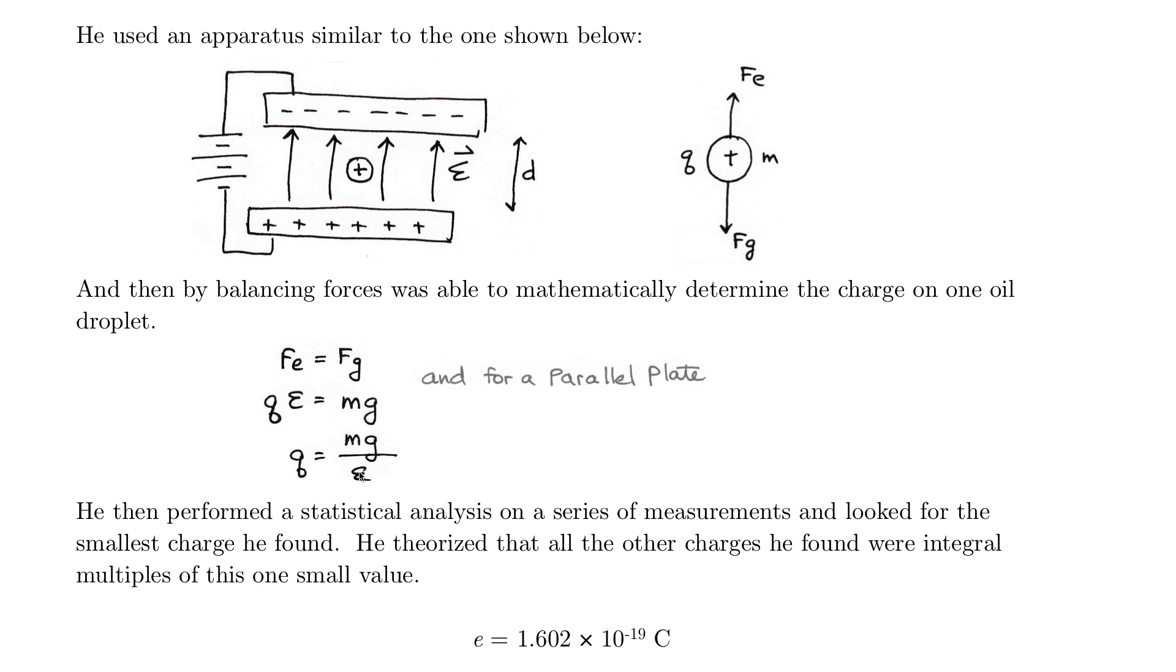For a parallel plate, I know exactly what E is. For a parallel plate, I can use this formula: the potential difference divided by the distance between the plates gives me the electric field. So basically he was able to say that the charge equals mass times the acceleration due to gravity times the distance between the plates divided by the potential difference, which equals the charge on one droplet.